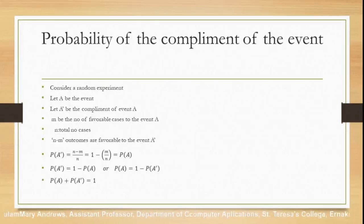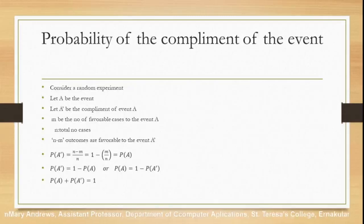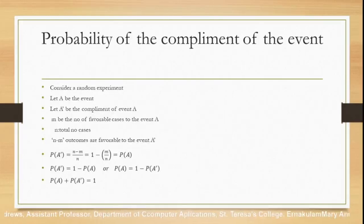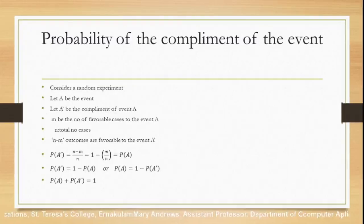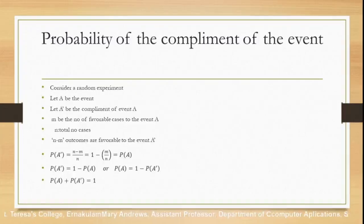Next, the probability of the complement of an event. Consider a random experiment. Let A be the event and A complement be the complement of event A. If m is the number of favorable cases for event A and n is the total number of cases, then there will be n minus m outcomes which are favorable to the event A complement. Our objective is to find P(A complement), so P(A') = (n - m) / n.